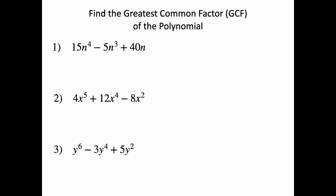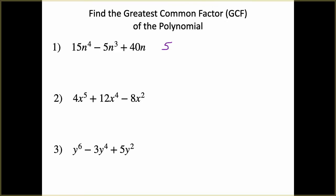Let's look at a couple of examples. We want to find the GCF of 15n⁴ − 5n³ + 40n. Look for the largest number that's common and can divide evenly out of 15, −5, and 40. The largest number common to all of them is 5. Then we look at our variables: we have n⁴, n³, and n. The lowest variable exponent is n¹, so we can pull out an n from every term.